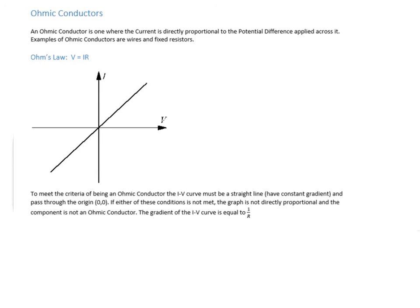Let's look at different types of conductors. An ohmic conductor obeys Ohm's law, which states that the potential difference across a component is directly proportional to the current through it. Direct proportionality requires a straight-line graph passing through the origin - both criteria are met here, confirming it's an ohmic conductor.